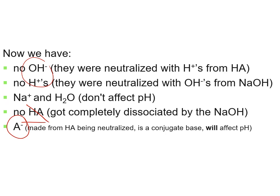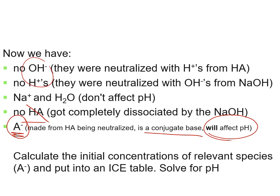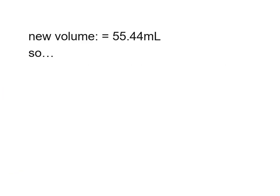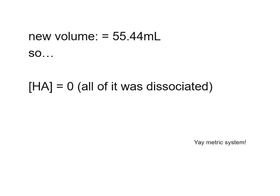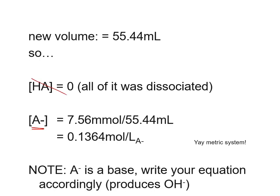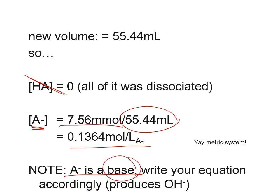At equivalence, the only relevant species remaining is the anion A⁻ — the conjugate base of the weak acid. The Na⁺ and water don't affect pH. The concentration of A⁻ is 7.56 millimoles ÷ 55.44 mL = 0.1364 mol/L. Since this is a conjugate base, we set up an ICE table for a weak base reacting with water, looking at OH⁻ concentration.